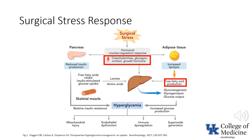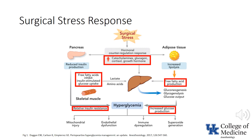In addition, the combined effect of the stress response is to increase free fatty acid production. Increased levels of free fatty acids inhibit glucose uptake by the cells. The combined effects result in an increase in glucose production, a decrease in insulin release, and a relative resistance to insulin.